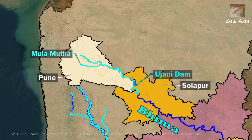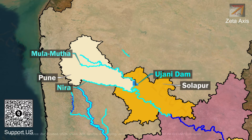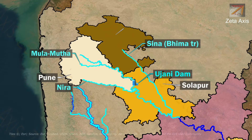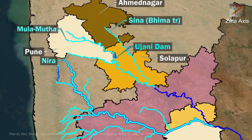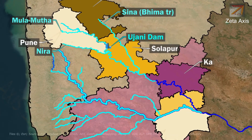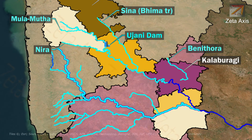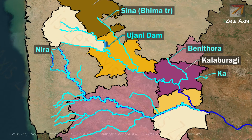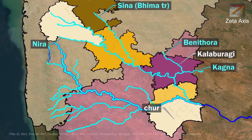Then in Solapur, the Neera River originating from Pune joins the Bhima River. On the Karnataka-Maharashtra border in Solapur, the Sina River originating from Ahmednagar merges with the Bhima River. The Bhima River enters Karnataka in Kalaburagi district where the Beni Thoda River, along with its tributary Kagana River, merges with the Bhima River. The Bhima River then flows further and joins the Krishna River in Raichur district of Karnataka.